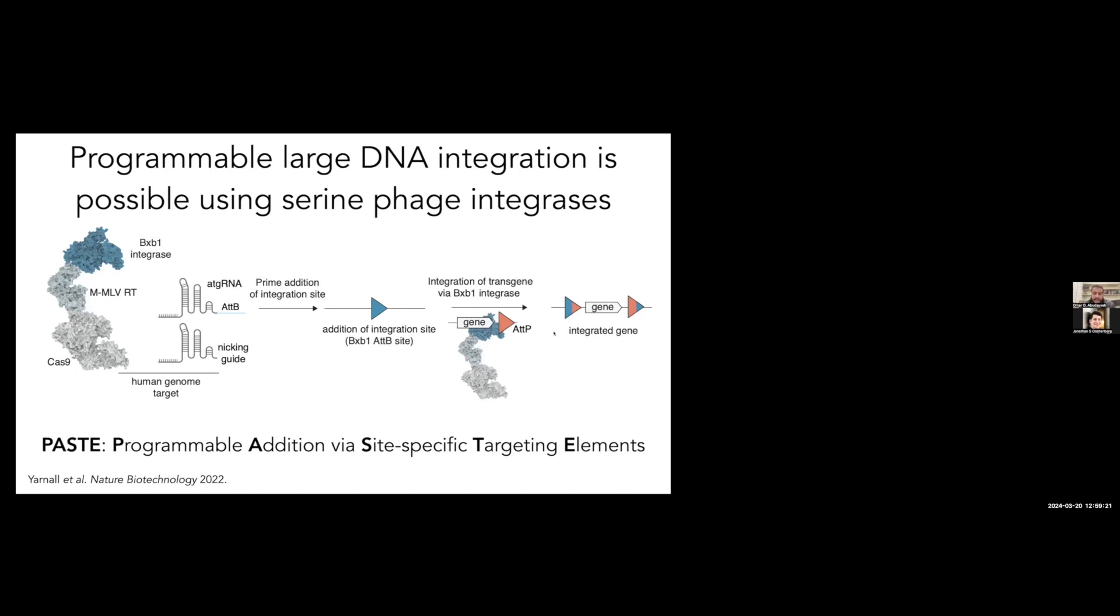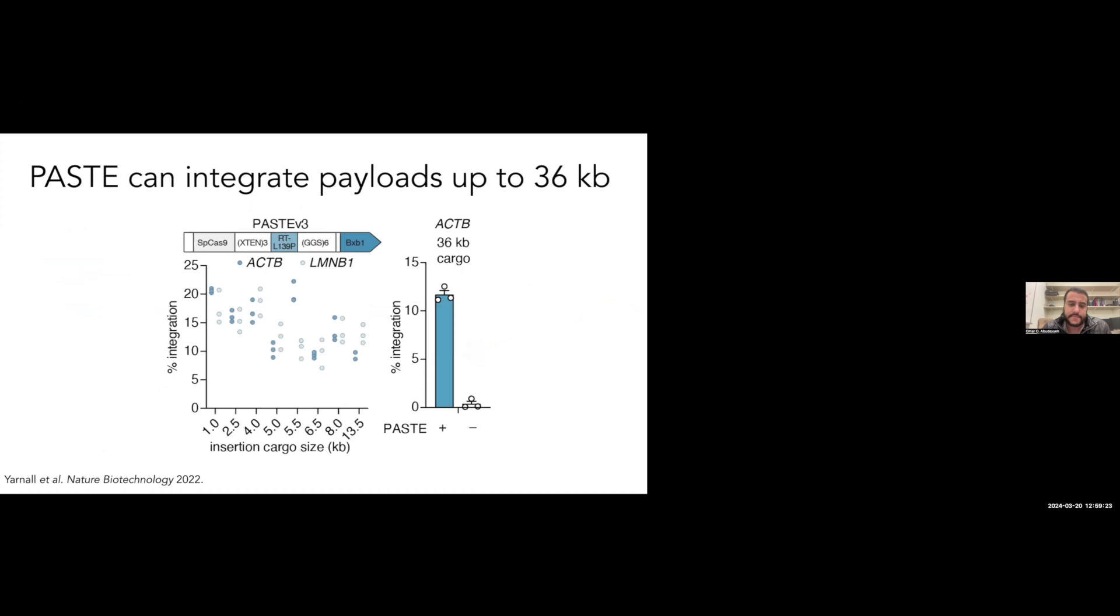We developed different versions of PASTE where we tested different types of linkers and whether the integrase should be attached or separated. This is a version called PASTE v3 that across different sizes of payloads at two different sites could actually insert semi-efficiently in human cells, even up to 36,000 bases, where the limitation doesn't really become the insertion size but actually how do you deliver 36,000 bases to a cell, which is a little difficult.